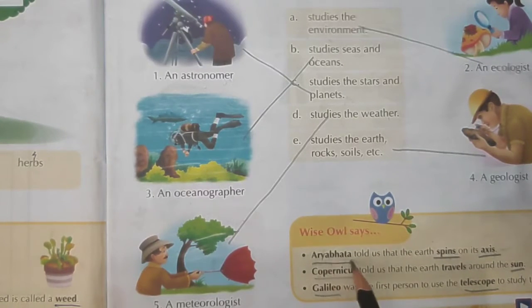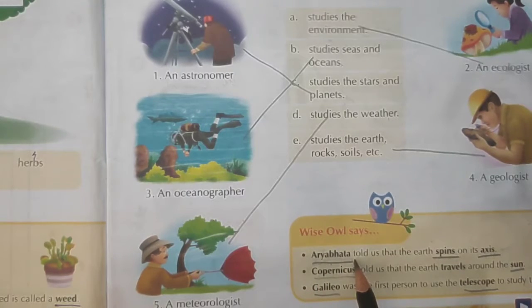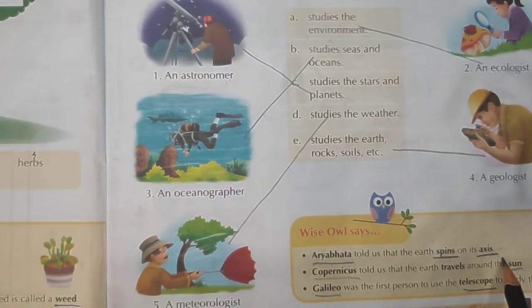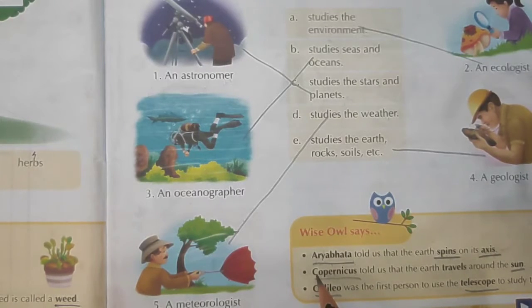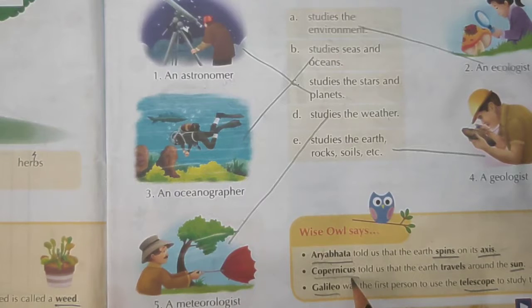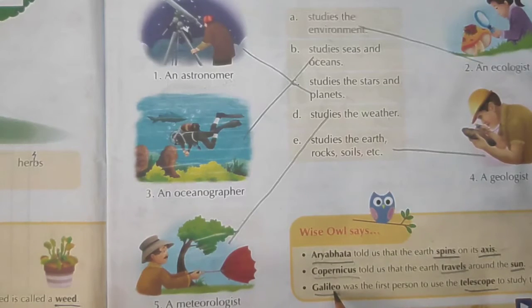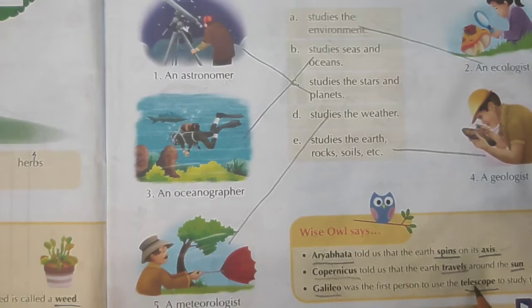We have to study all the spellings. Aryabhatta: A-R-Y-A-B-H-A-T-A. Spins: S-P-I-N-S. Axis: A-X-I-S. Copernicus: C-O-P-E-R-N-I-C-U-S. Travels: T-R-A-V-E-L-S. Sun: S-U-N. Galileo: G-A-L-I-L-E-O. Telescope: T-E-L-E-S-C-O-P-E.